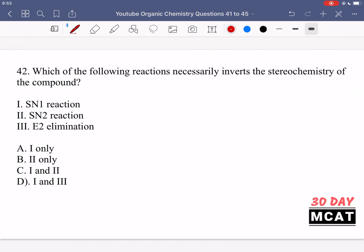In question 42, we're asked which reaction necessarily inverts the stereochemistry of the compound. You should characteristically know that SN2 reactions are the ones that invert stereochemistry. In an SN2 reaction, you have a leaving group, and at the same time a nucleophile does a backside attack on the carbon, which inverts the stereochemistry. It goes from R to S, or from S to R.